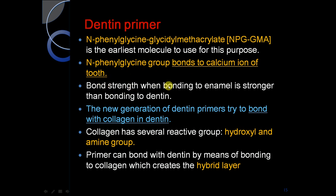Bond strength when bonding to enamel is stronger than bonding to dentine — a very important line. The new generation of dentine primers tries to bond with collagen in dentine. Collagen has several reactive groups, i.e., the hydroxyl and the amine group. The primer can bond with dentine by bonding to collagen, which creates the hybrid layer.